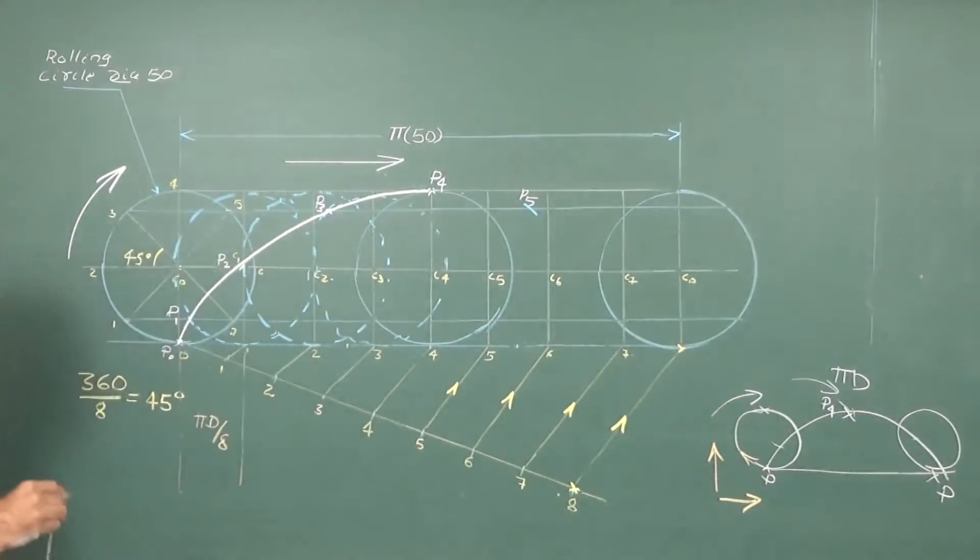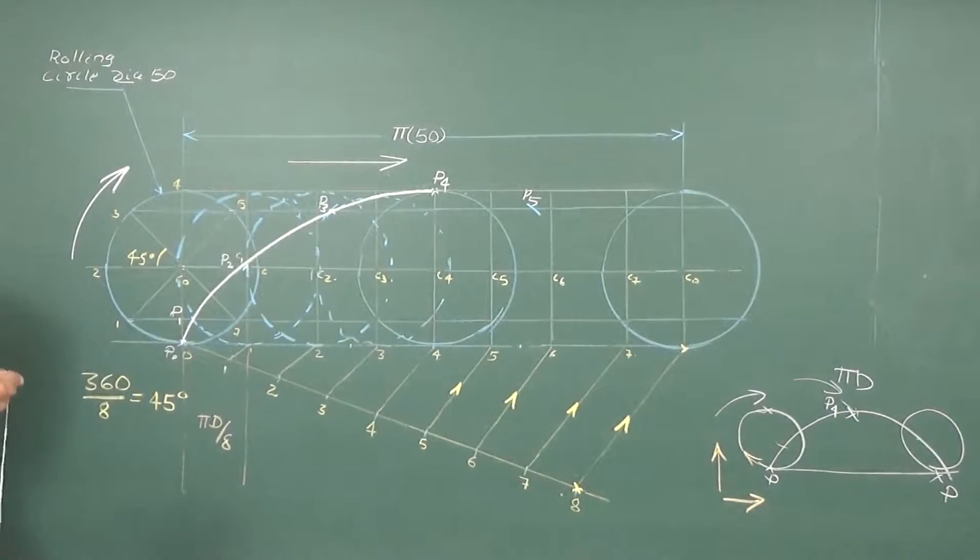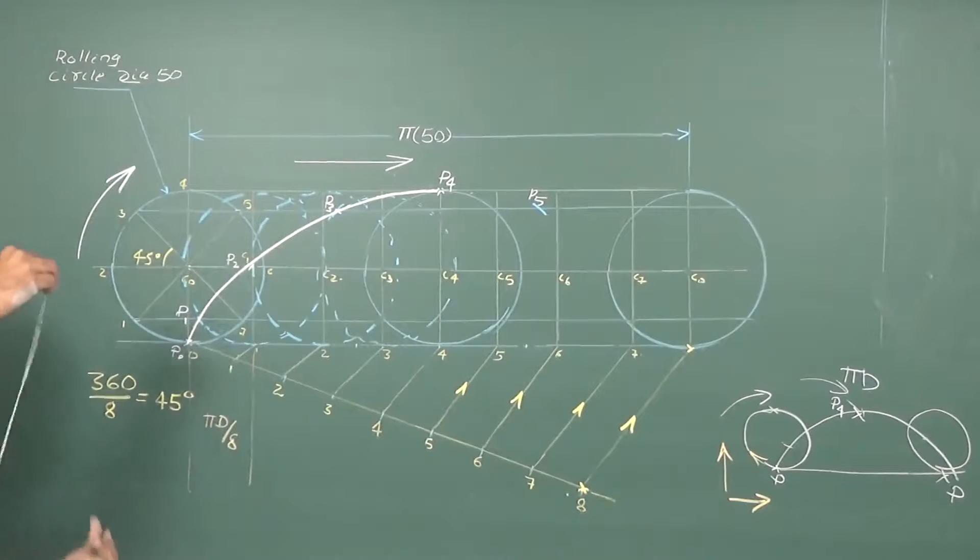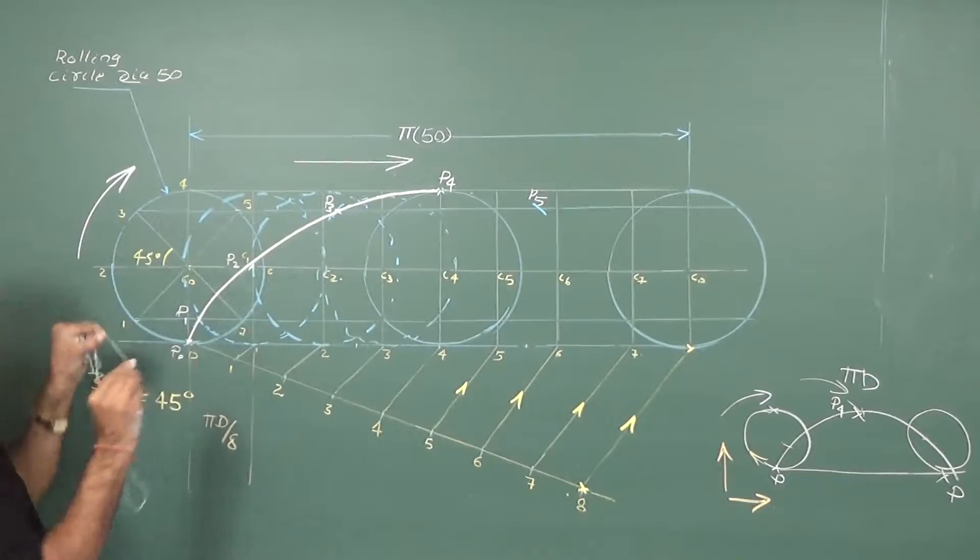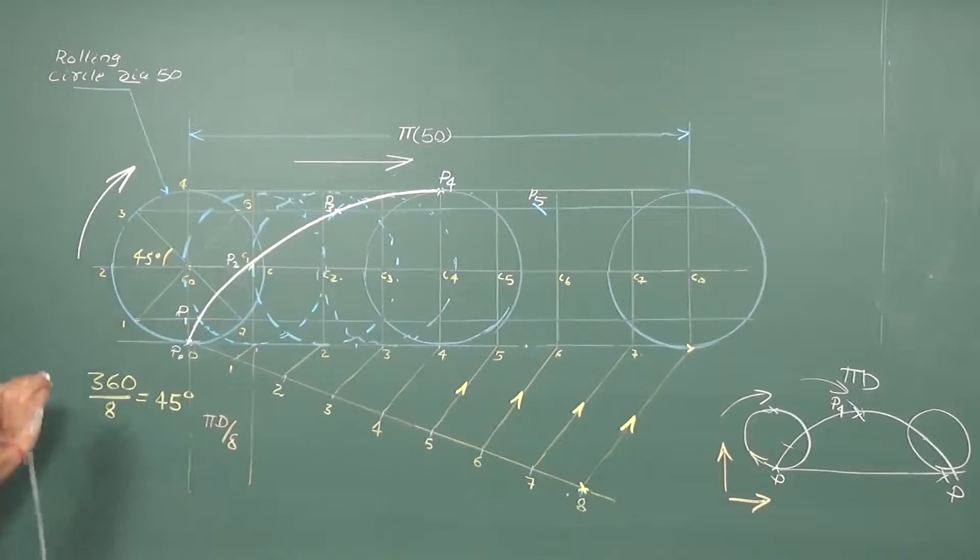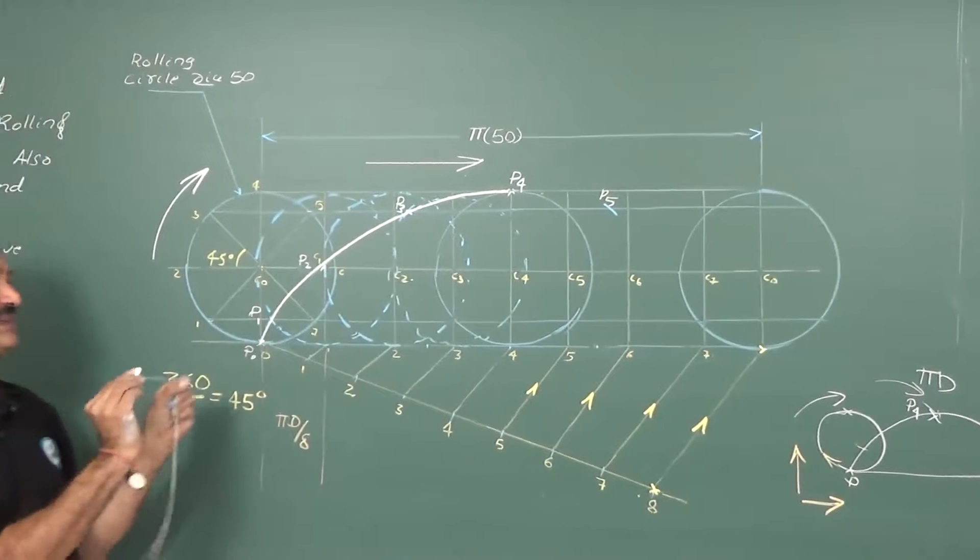To get the further point P6, the approach is obviously same. Take this radius. Whatever the radius, the radius is fixed. That is 25 mm obviously. And you have to keep the center C6.